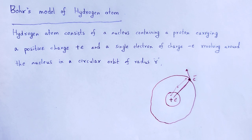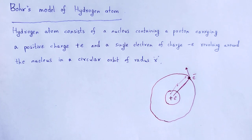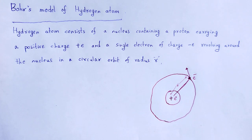Next, we can calculate the radius, energy, and frequency as well as wave number in the case of hydrogen atom by taking Bohr's model of an atom.